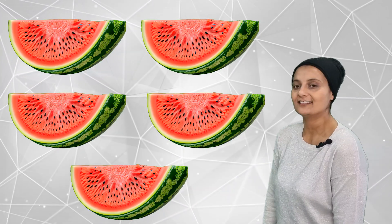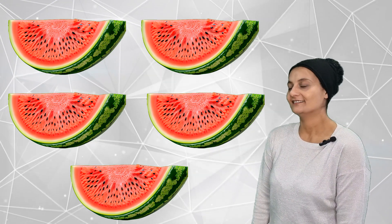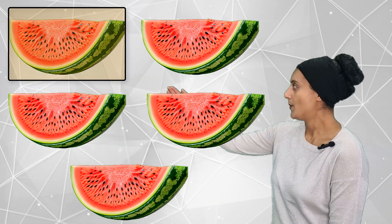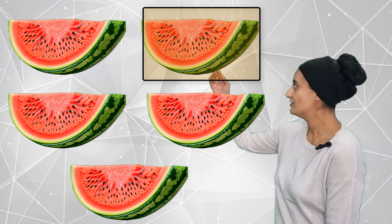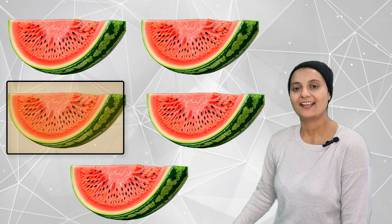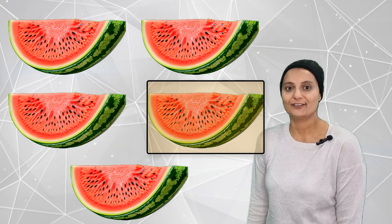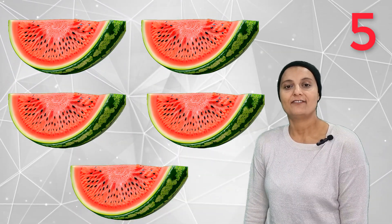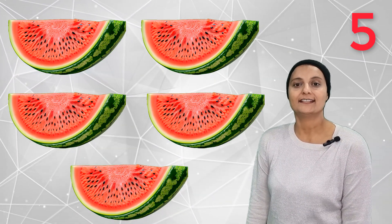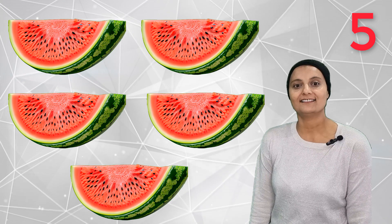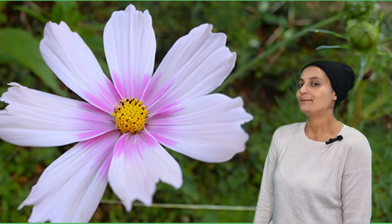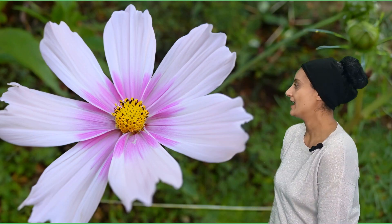Let's see how many big bright watermelons there are. There are one, two, three, four, five. Five bright watermelons.